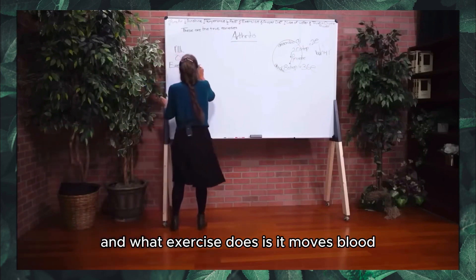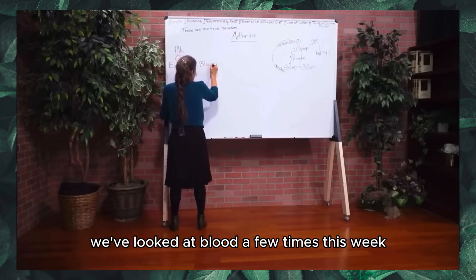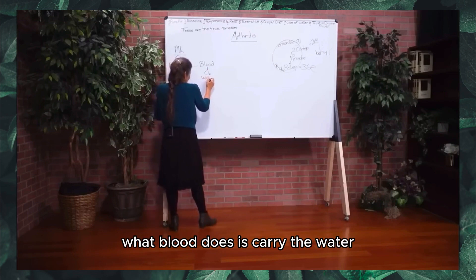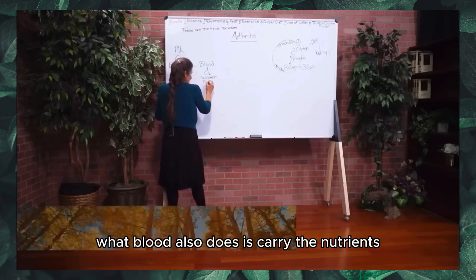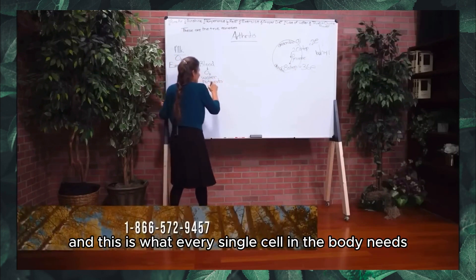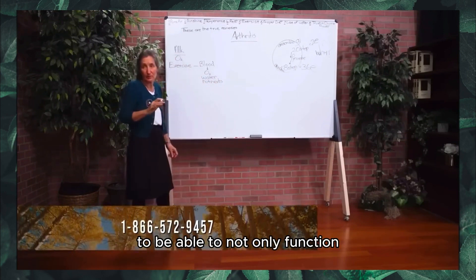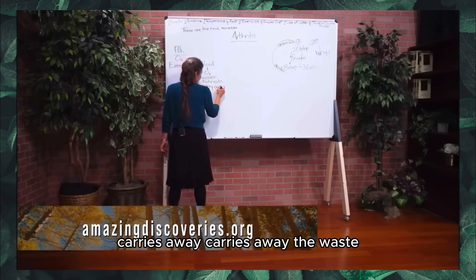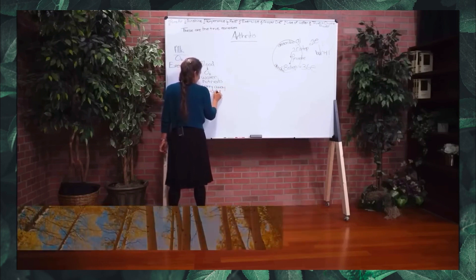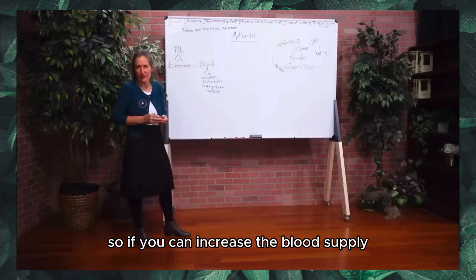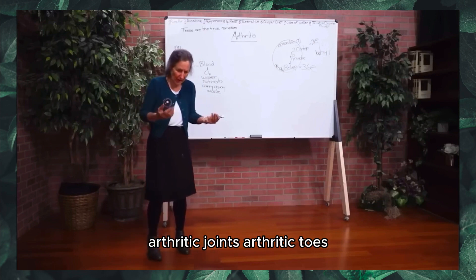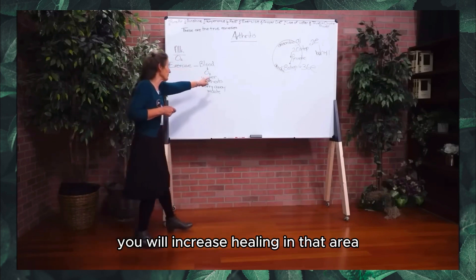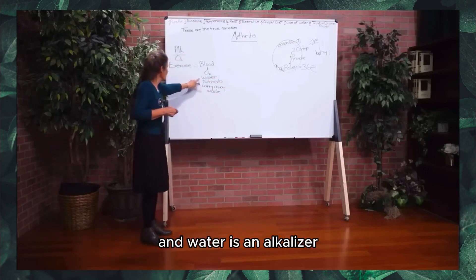Exercise moves blood. Blood carries oxygen, water, and nutrients — everything every cell needs to function and to heal. Blood also carries away waste. So if you can increase the blood supply to any part of the body that's not working — arthritic joints anywhere in the body — you will increase healing in that area. Water is an alkalizer, and waste is acid.